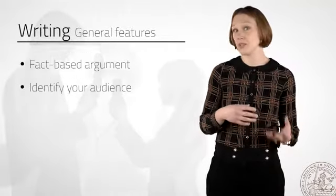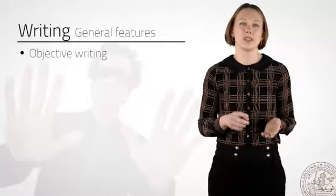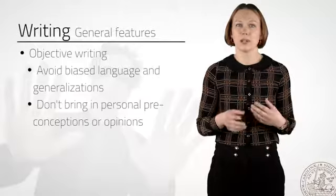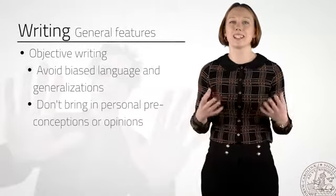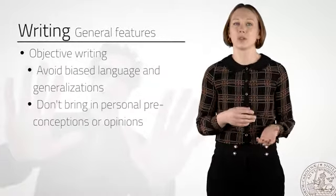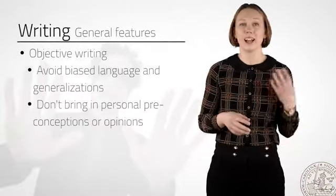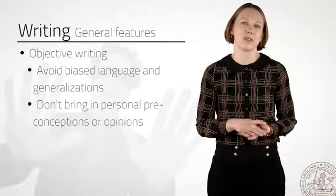Another central feature of academic writing is that it's objective, which means you should avoid biased language and generalizations and that you shouldn't bring in your personal preconceptions or opinions. An academic essay about a fictional character, a political conflict, or a religious issue should present an argument that sheds light on the actual topic but mustn't be a subjective statement on the part of the writer.